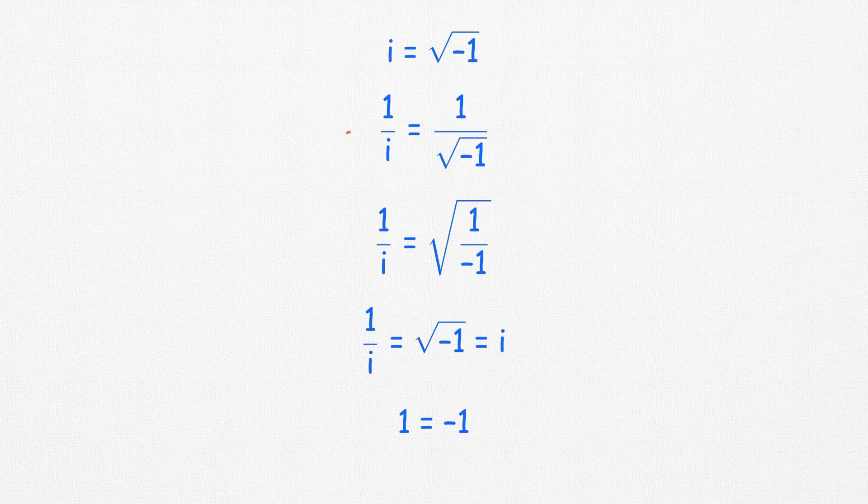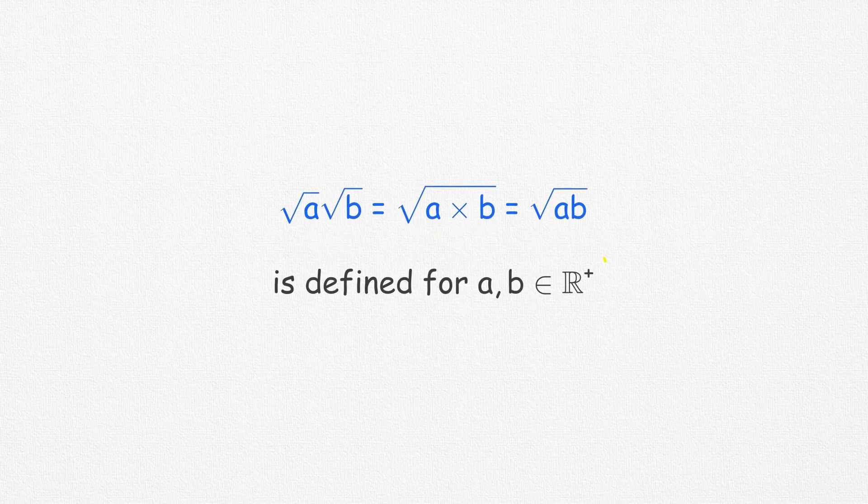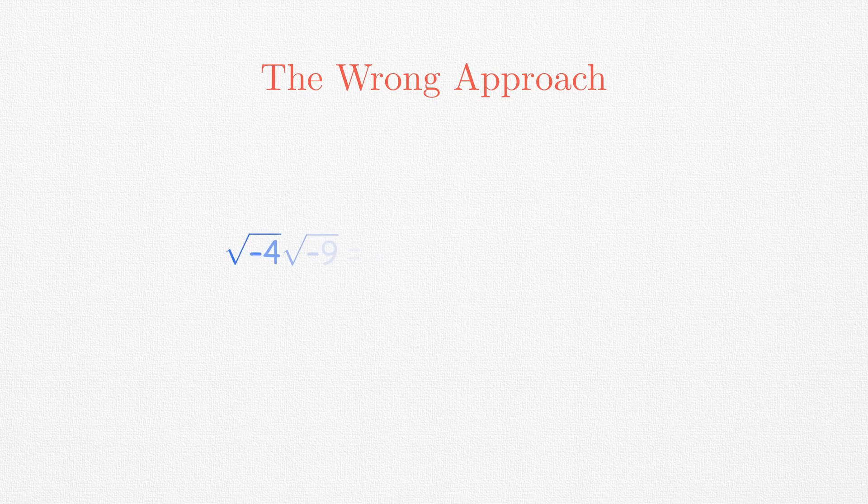Now this obviously is not correct, but what is the reason behind it? It's the third step, taking a common square root. We often combine root over A times root over B to write root over A times B, but this is valid only for positive real numbers. So this way to obtain the wrong answer is also wrong.